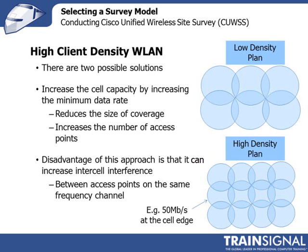Looking at the first option — increasing the minimum data rate — you go into the access point and configure it so that no clients can communicate unless they are transmitting at least at a specified data rate. In this example, a minimum data rate of 50 megabits per second means a client further away that could only communicate at 20 megabits per second can no longer associate with that access point, and is therefore not under its coverage. The problem is that shrinking cell coverage brings access points physically closer together, and if two operate on the same frequency they will interfere more — that's co-channel interference.